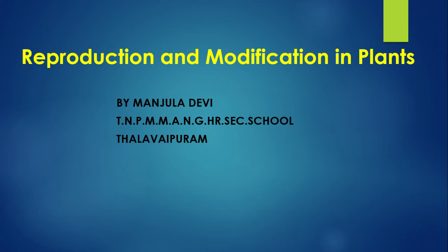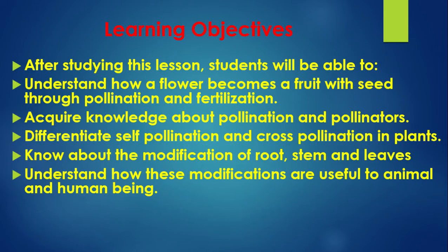Reproduction and modification in plants. Learning objectives: After studying this lesson, students will be able to understand how a flower becomes a fruit with seed through pollination and fertilization, acquire knowledge about pollination and pollinators, differentiate self-pollination and cross-pollination in plants, and know about the modification of root, stem and leaves and understand how these modifications are useful to animals and human beings.